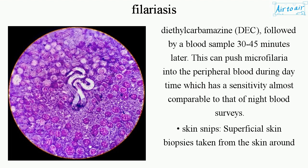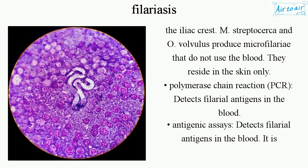Surveys. Skin snips: superficial skin biopsies taken from the skin around the iliac crest. M. streptocerca and O. volvulus produce microfilariae that do not use the blood — they reside in the skin only. Polymerase chain reaction (PCR) detects filarial antigens in the blood.